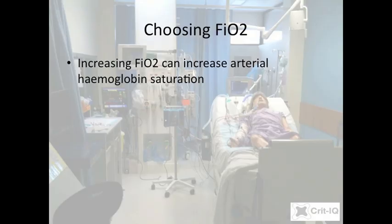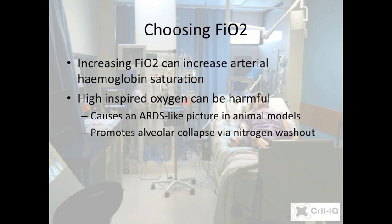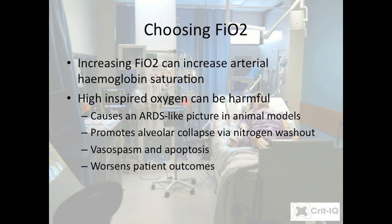A well-established principle in critical care is to maintain oxygen delivery to the cell, which is at least in part determined by the saturation of circulating haemoglobin. Increasing the FiO2 will increase oxygen delivery, but it has become apparent that oxygen may in fact be harmful. High inspiratory fractions of oxygen have been associated with worsening lung damage and nitrogen washout, promoting alveolar collapse. Furthermore, high arterial partial pressures of oxygen may promote vasospasm and cell death, with evidence that high pO2 can worsen outcomes in stroke, myocardial infarction, and after cardiac arrest.